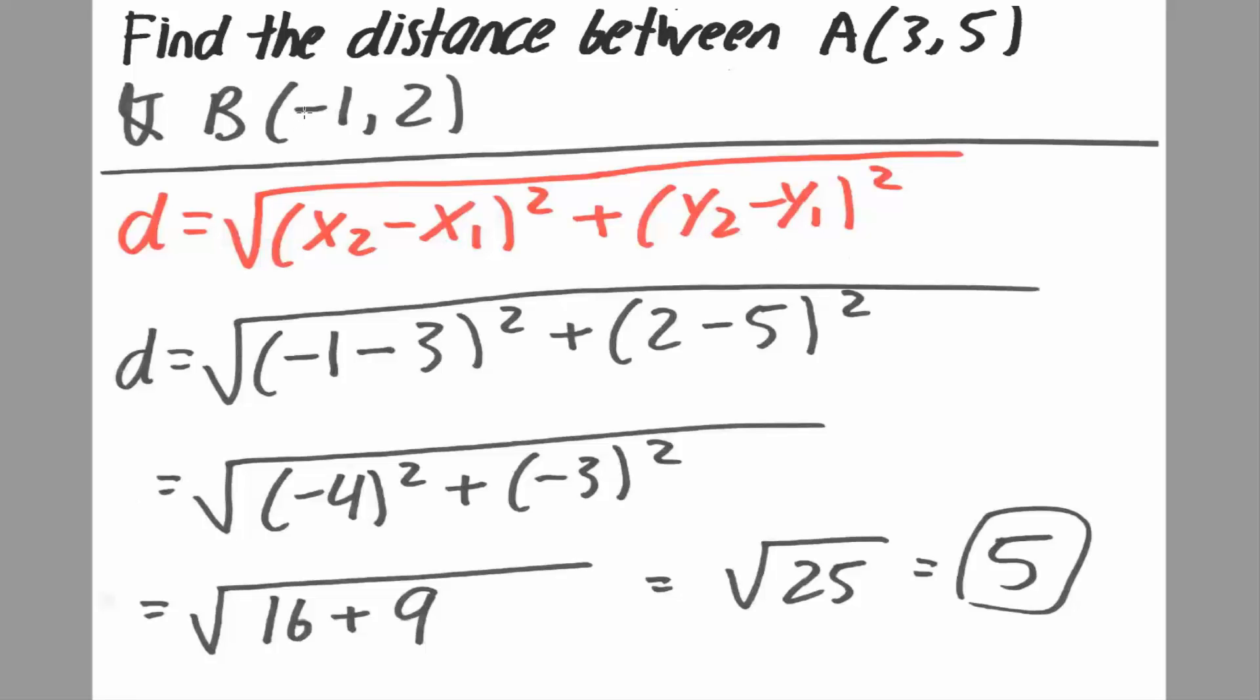x2 we said was negative 1, negative 1 minus x1, 3, parentheses squared plus y2, which is 2, minus y1, which is 5.